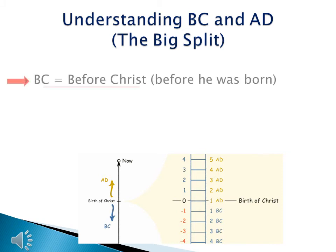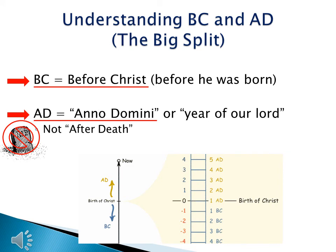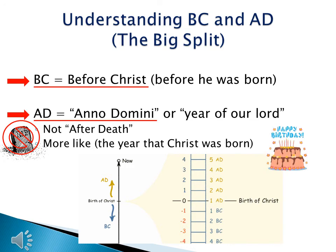Here's how it works. We have BC, which stands for Before Christ — before Jesus Christ was born. That time before Jesus Christ was born is BC. Then we have AD, which stands for Anno Domini, or the year of our Lord. Many people get confused: this is not about when Jesus dies — it's not 'AD after death.' BC is before the year that Jesus Christ was born, and AD is the year that Jesus Christ was born and all the time after that. The big split: BC and AD.